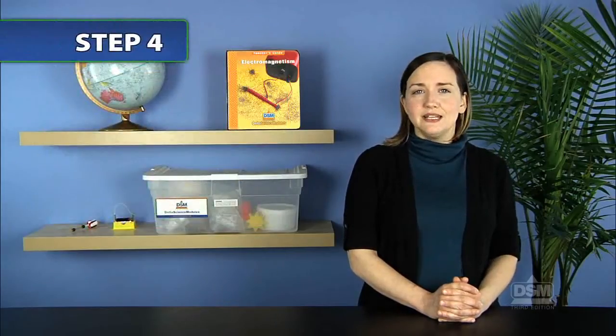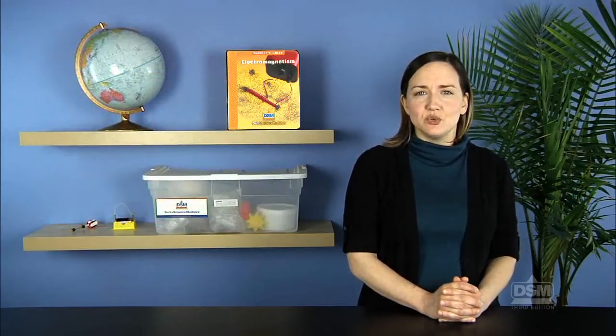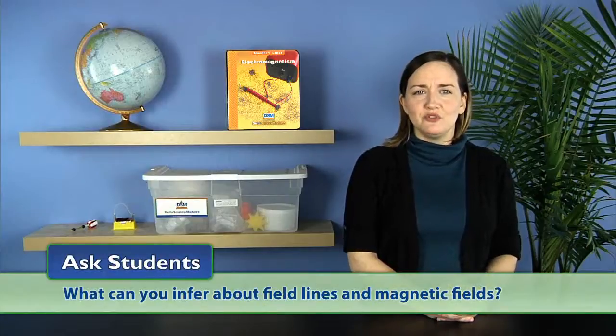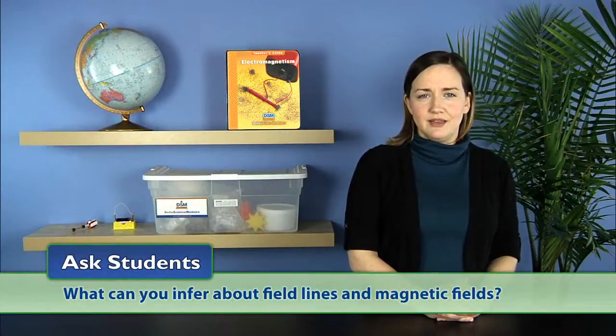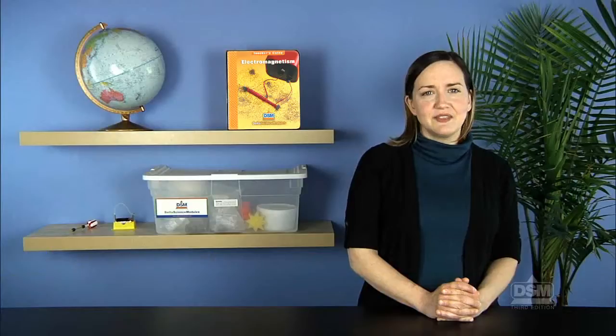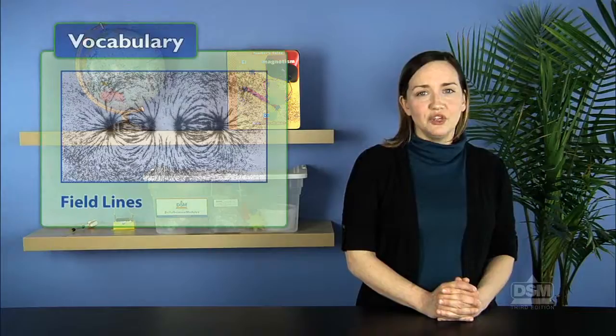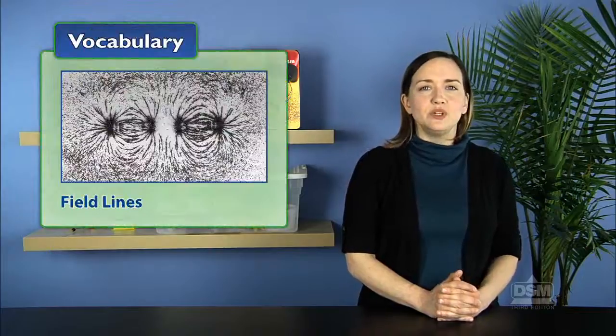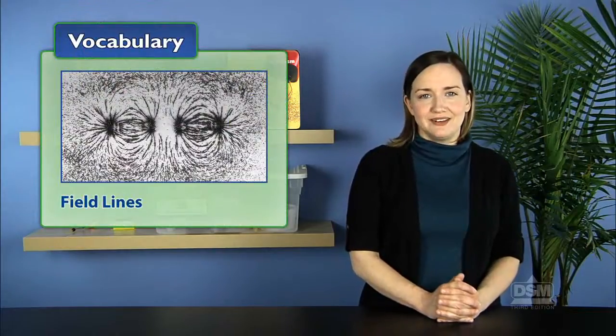Next, initiate a discussion by asking students, what can you infer about field lines and magnetic fields? The students may state that the magnetic field appears to exist as invisible field lines. Even though the field lines are always present, they only become visible when the filings are added.